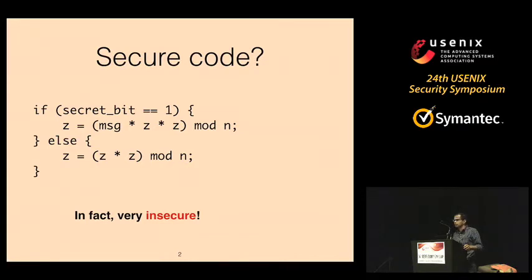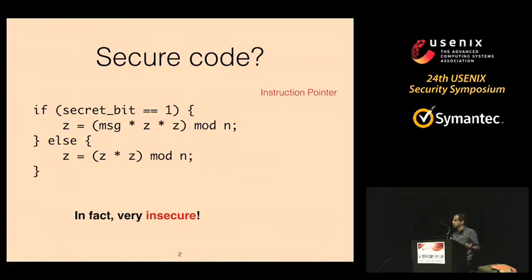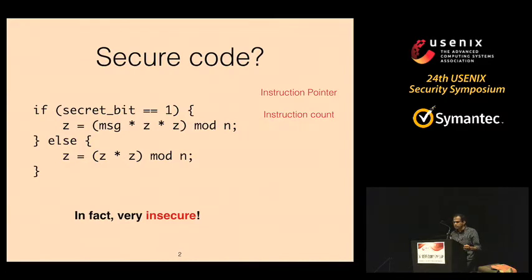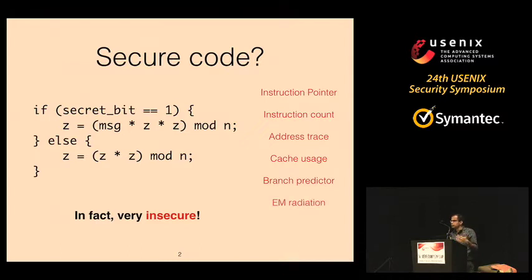It leaks the value of secret bit over multiple different side channels. For instance, if the adversary can find out that your instruction pointer landed somewhere in the else block, they can infer the secret bit value was zero. Also, by counting the number of instructions — there is an additional multiplication in the then block — you get to know whether the secret bit was zero or one. There's an additional memory reference whose address trace leaks information. Similarly, cache usage and branch predictor state also leak.